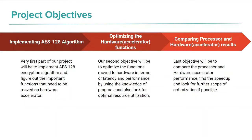The project objectives: the first part is to implement the AES-128 algorithm and figure out which functions need to be moved onto the hardware accelerator. After that, those functions need to be optimized using different pragmas and optimization techniques for optimal resource utilization and latency. Finally, we compare the hardware and software performance, find the speedup, and look for further scope of optimization if possible.